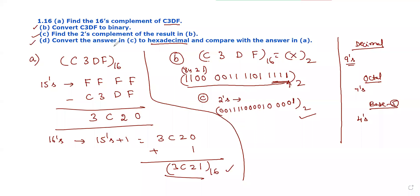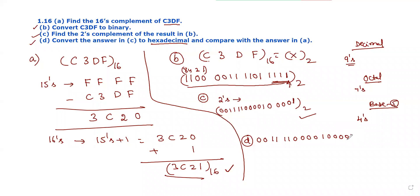Next, D bit: convert the answer in C to hexadecimal and compare with the answer in A. Rewrite the two's complement value in hexadecimal. Split into groups of 4 bits: 0011 1100 0010 0001. Converting: 3, C, 2, 1. So the hexadecimal value is 3C21, which matches the 16's complement answer from part A.